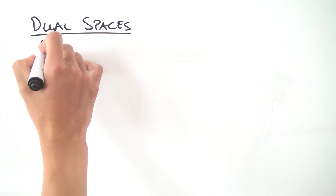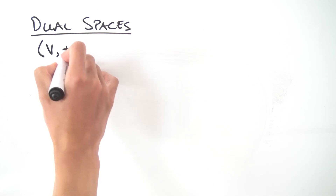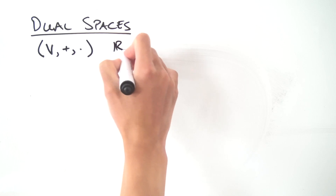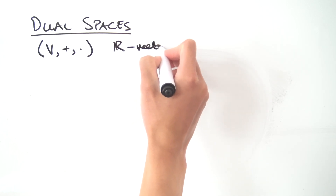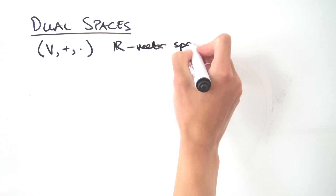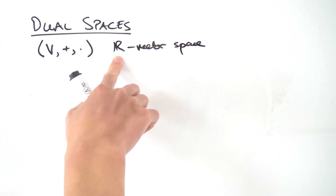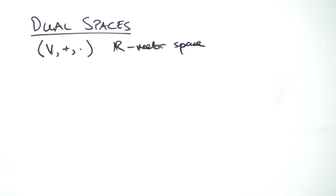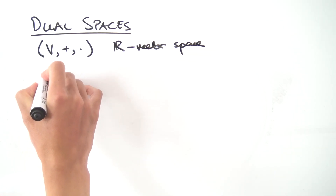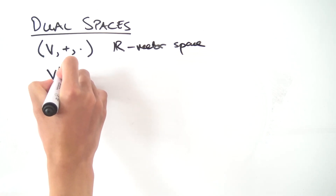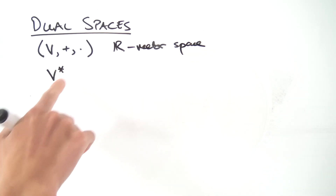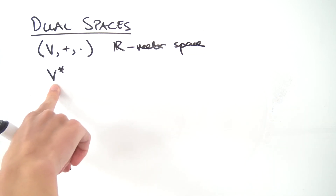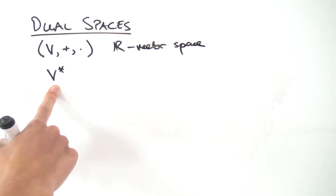So what exactly are dual spaces? Well, we need a vector space to start off with — let's say V with addition and scalar multiplication, and let's say this is an ℝ-vector space. Usually you would also have a ℂ-vector space, or in general a vector space over some field F, but to keep things simple we'll just pick ℝ. What we're going to be doing is constructing what's known as the dual of this vector space, called the dual space, and this is going to be a vector space in its own right as well.